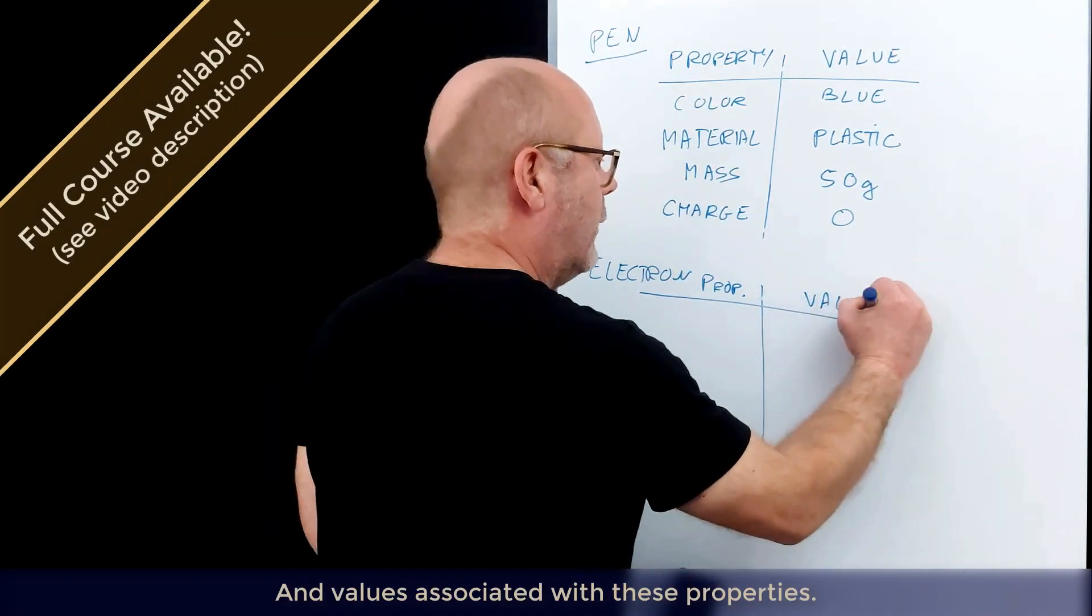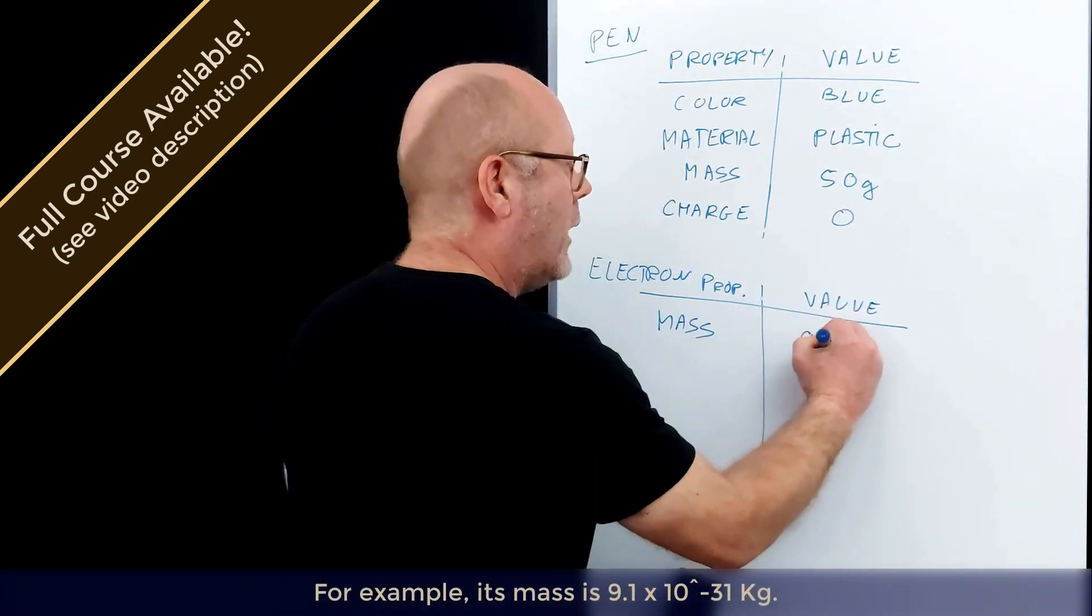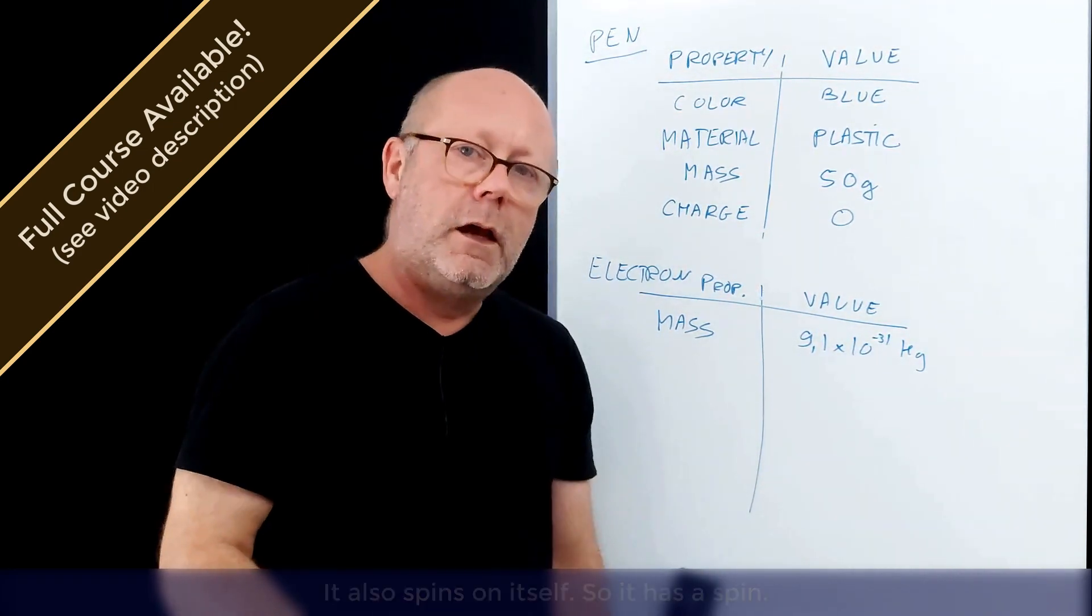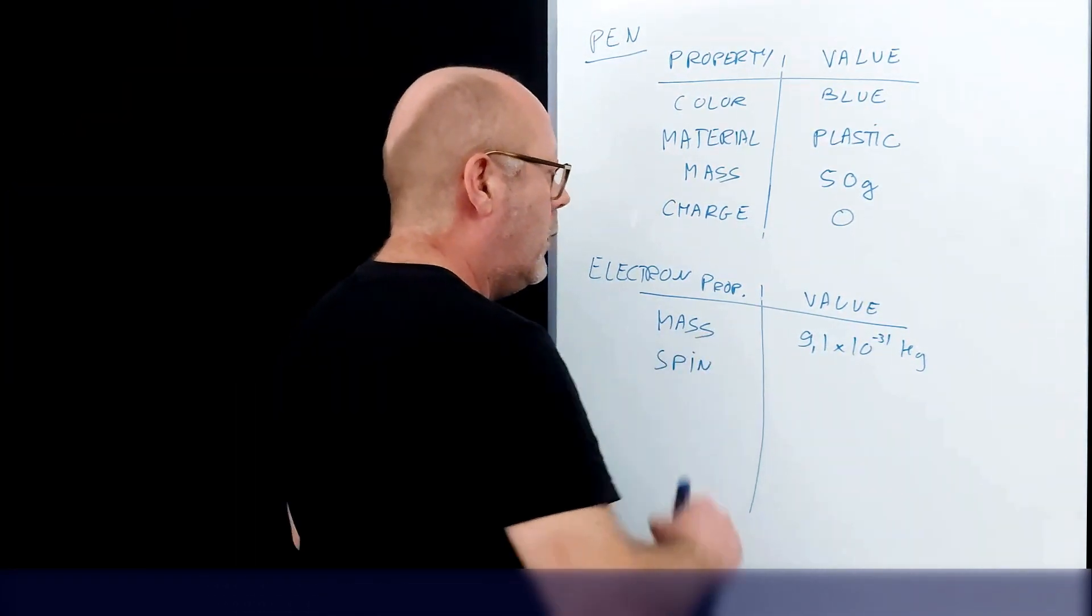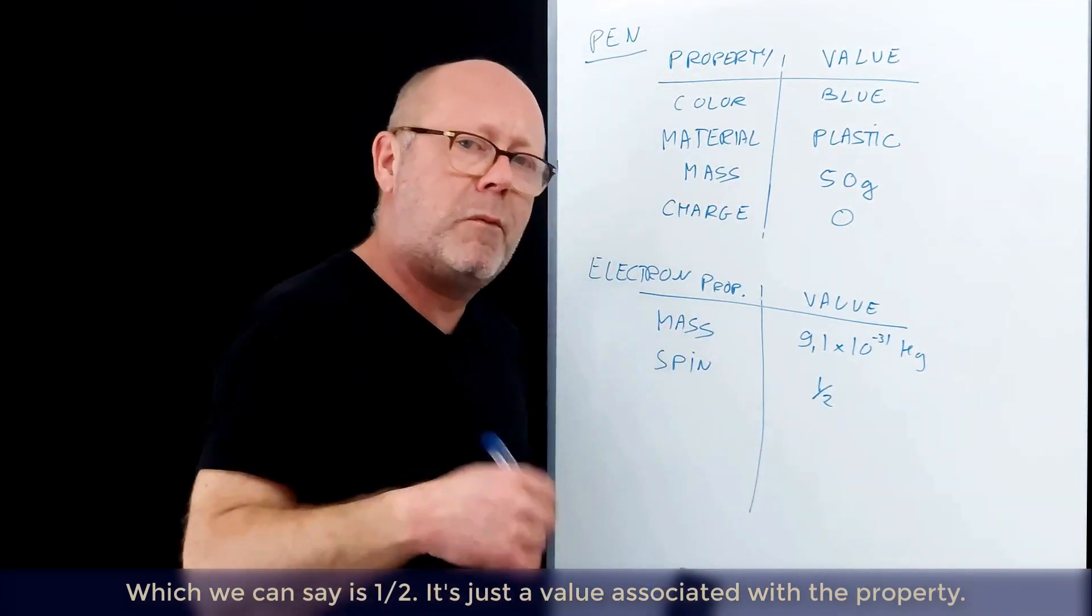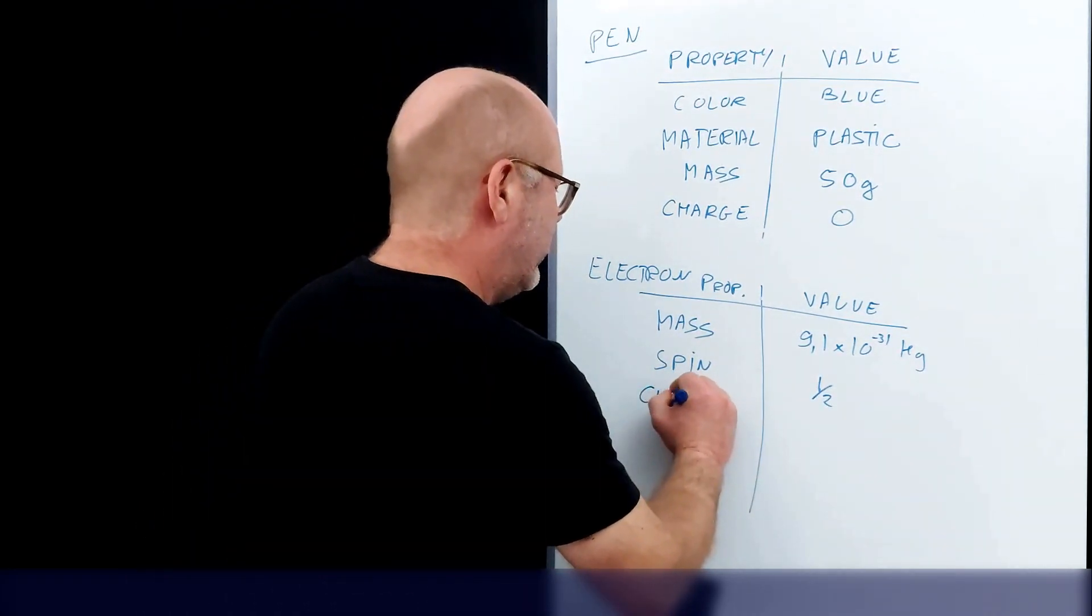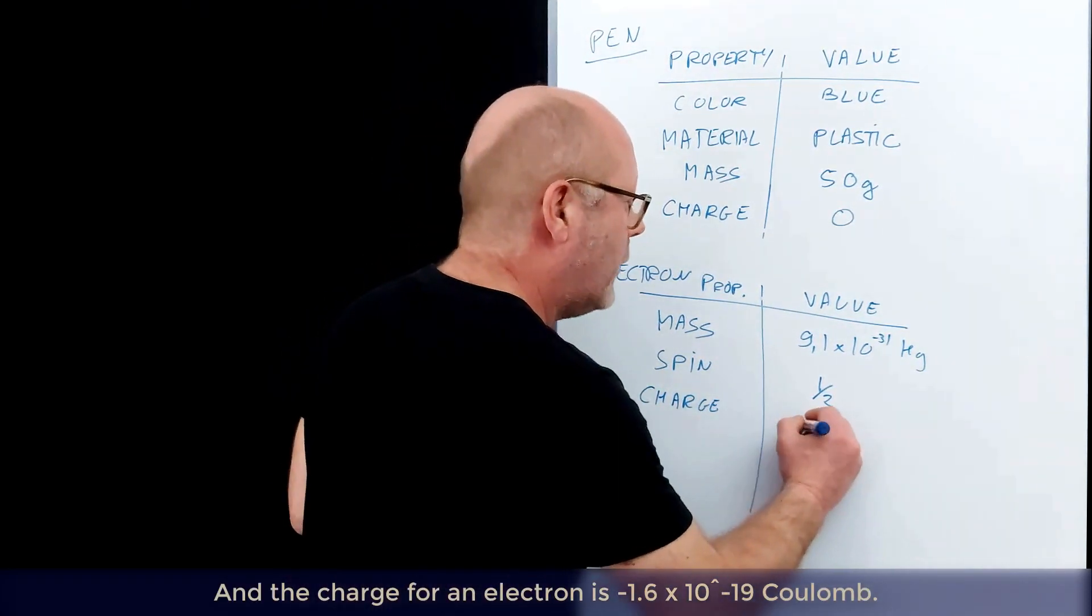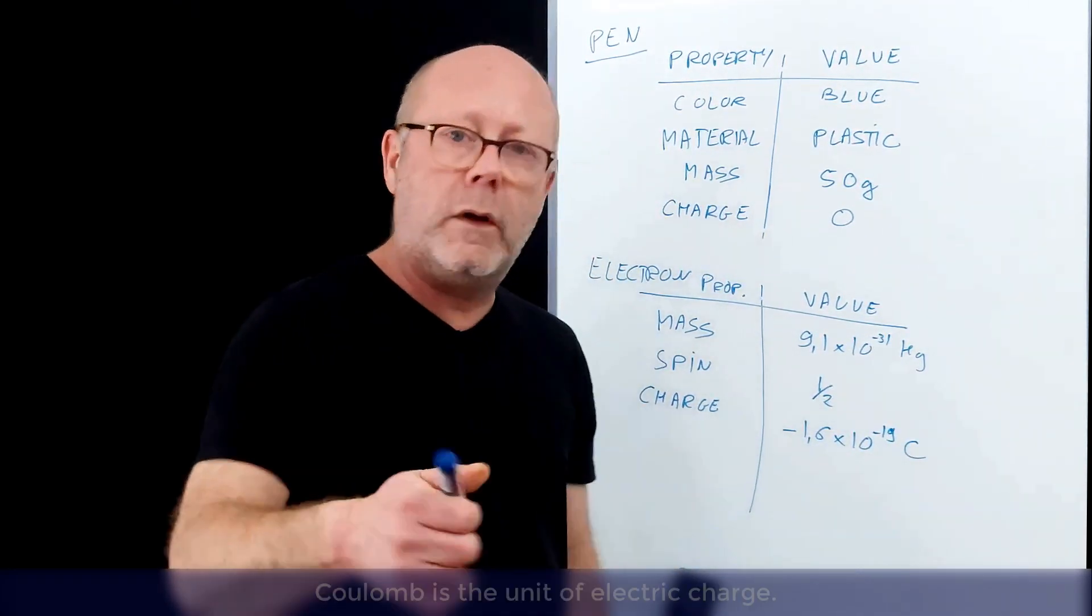For example, its mass is 9.1 × 10^-31 kilograms. It also spins on itself, so it has a spin which we can say is 1.5—it's just a value associated with a property. It also has a charge, and the charge for an electron is -1.6 × 10^-19 coulombs. Coulomb is the unit of electric charge.